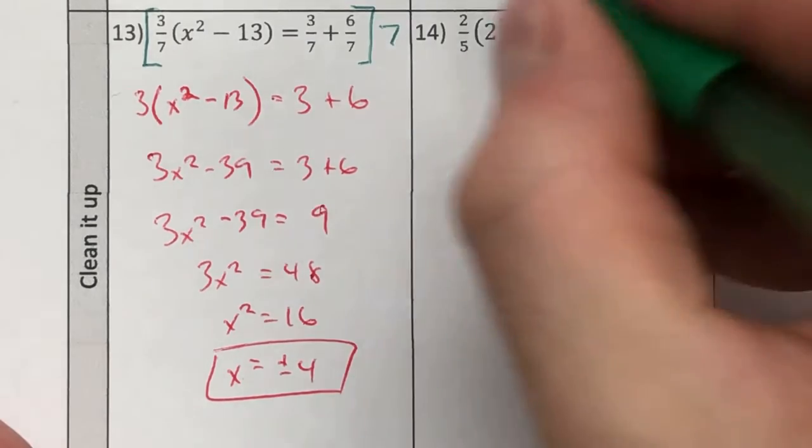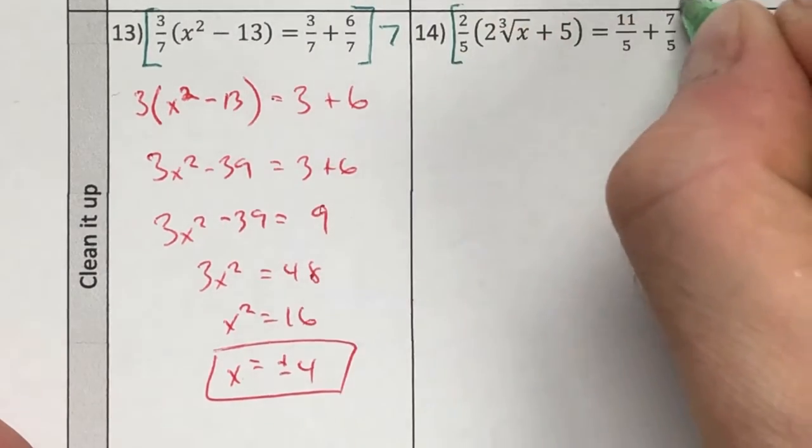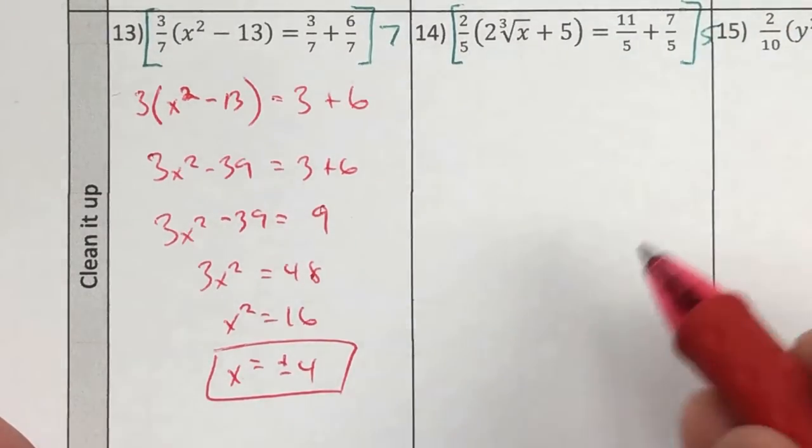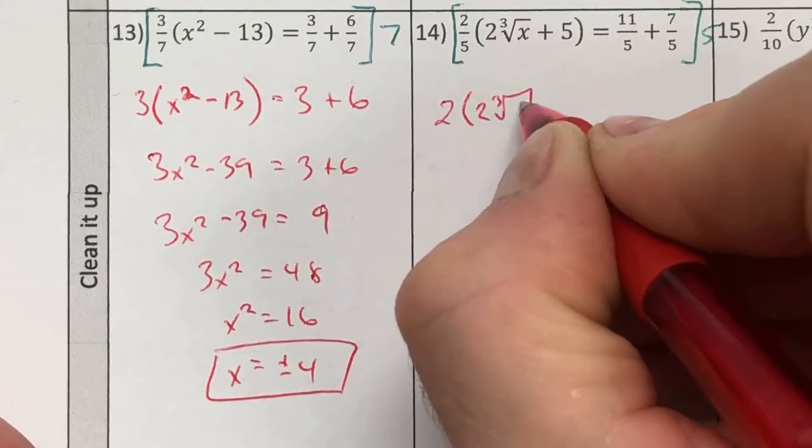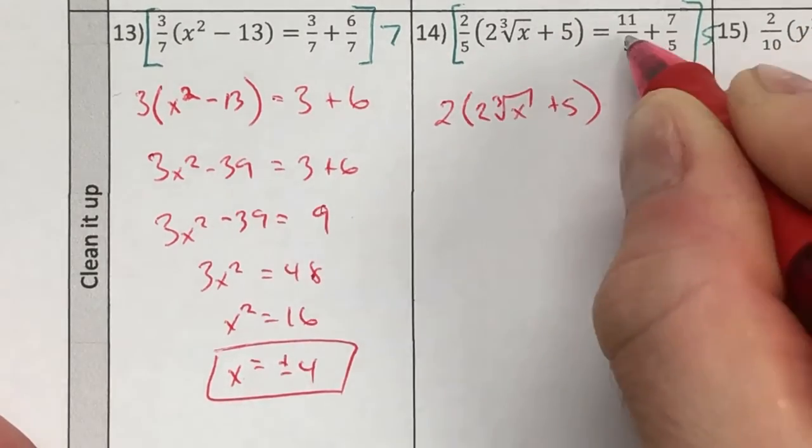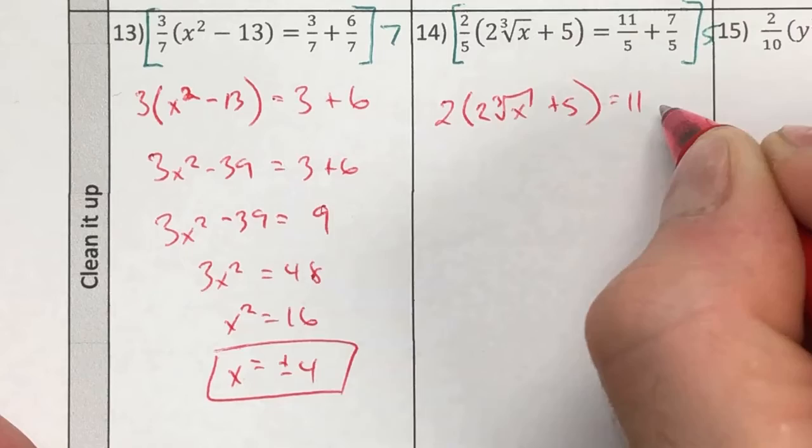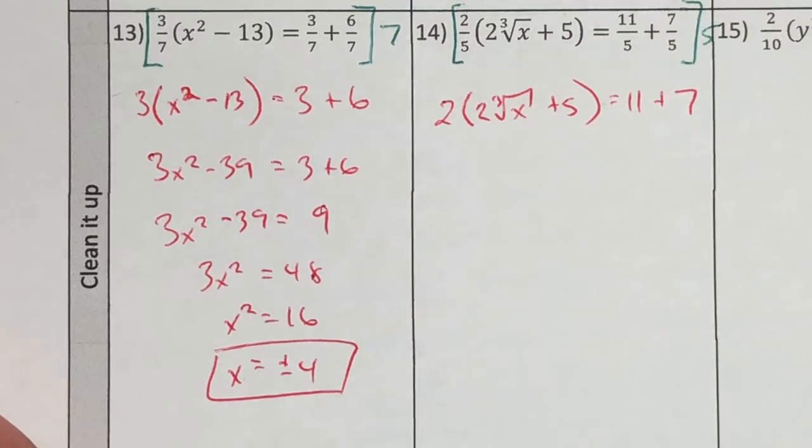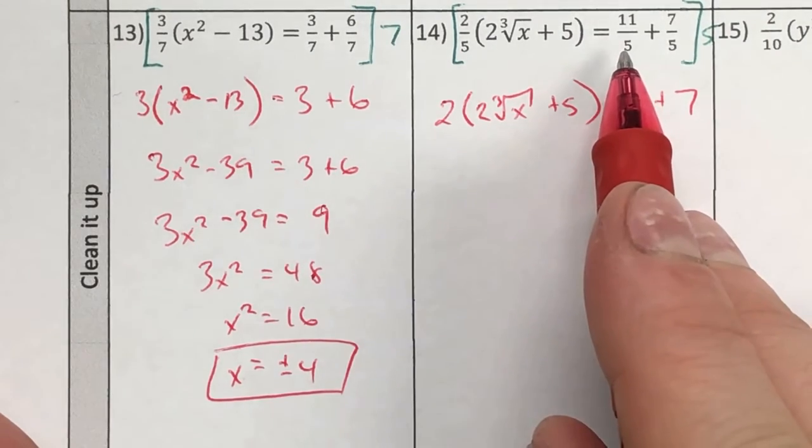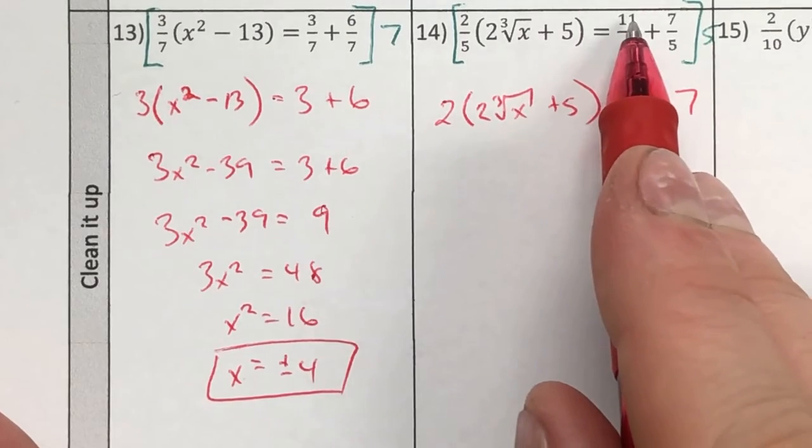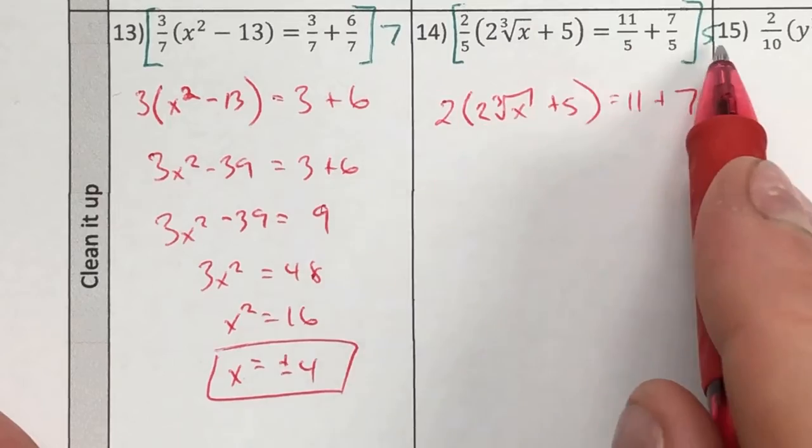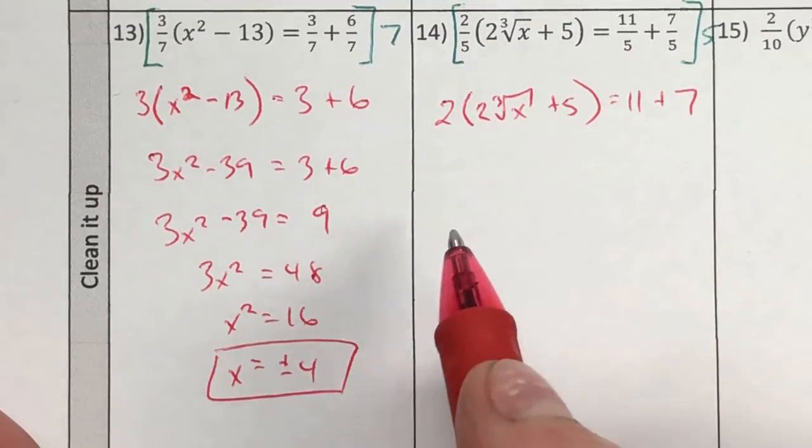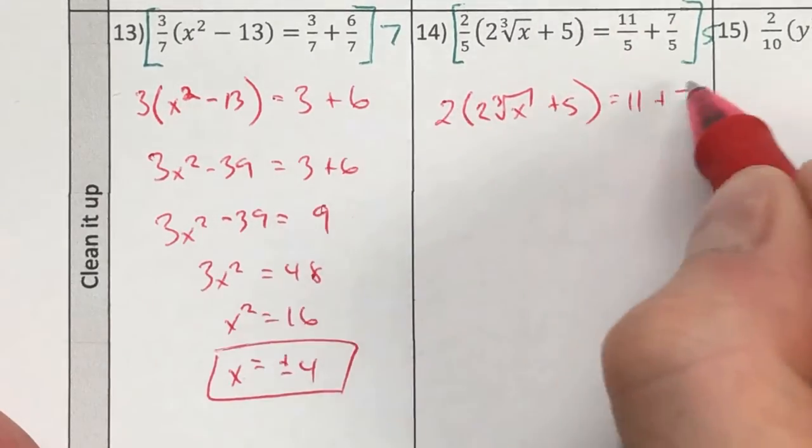So the first thing that I would do is I would go ahead and I would say, I'm going to clear this whole fraction by multiplying everything by 5, which gets rid of that, gets rid of this fraction, and it gets rid of that fraction. Now, if this was not a fraction, let's say this was an 11, I would actually multiply that 11 by 5 and get a 55. But because this is a fraction, that basically just negates itself. So clear the fraction.